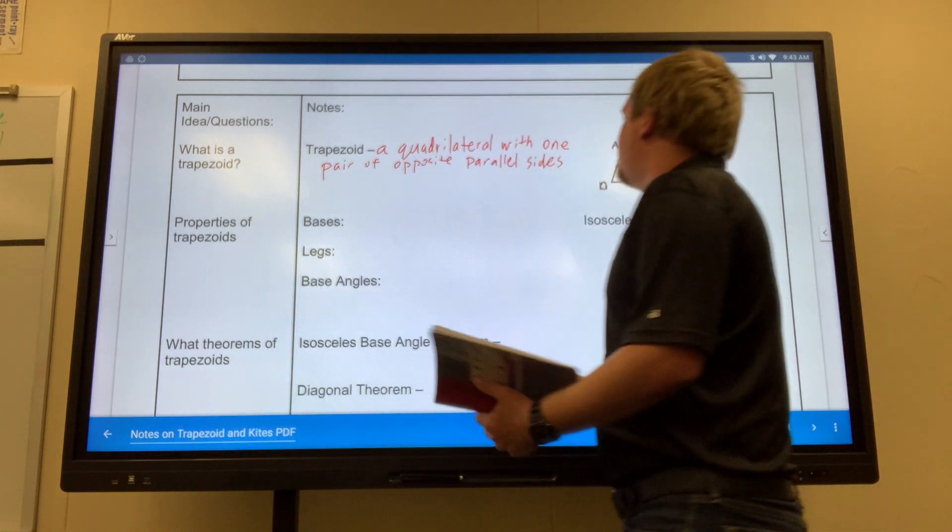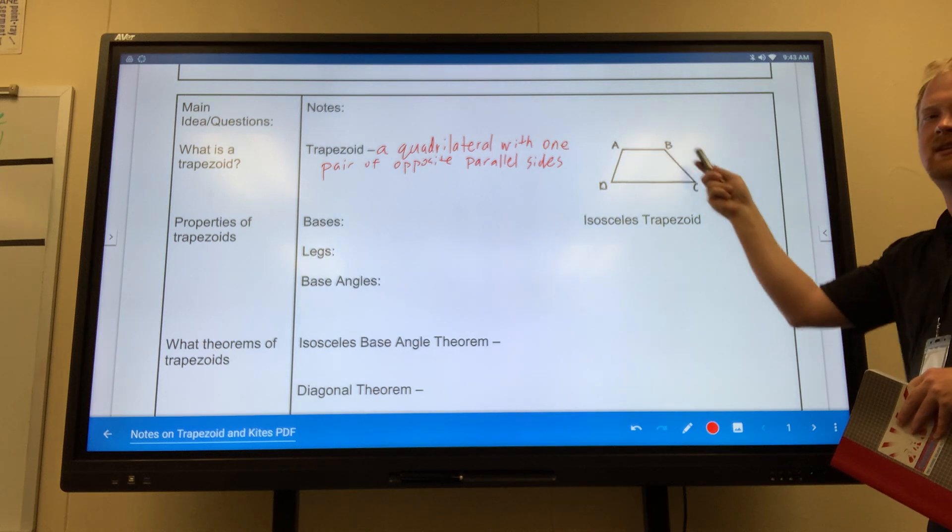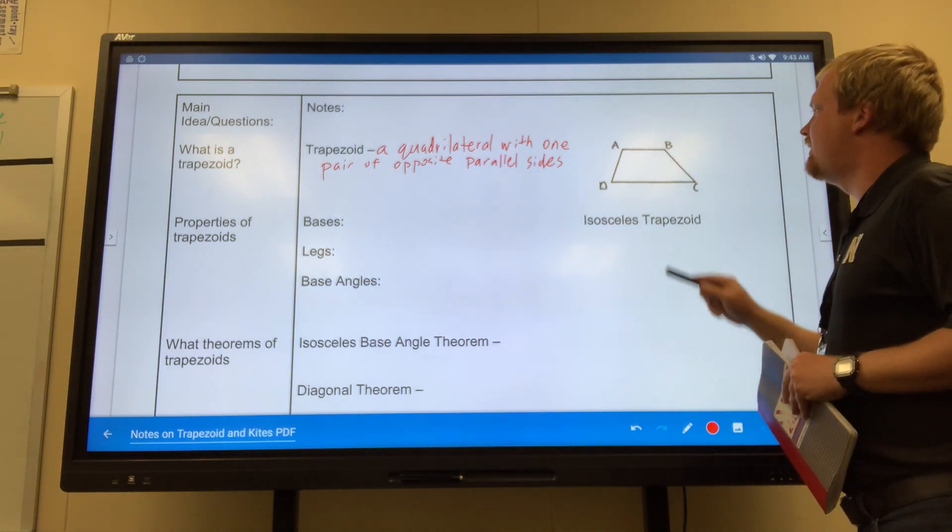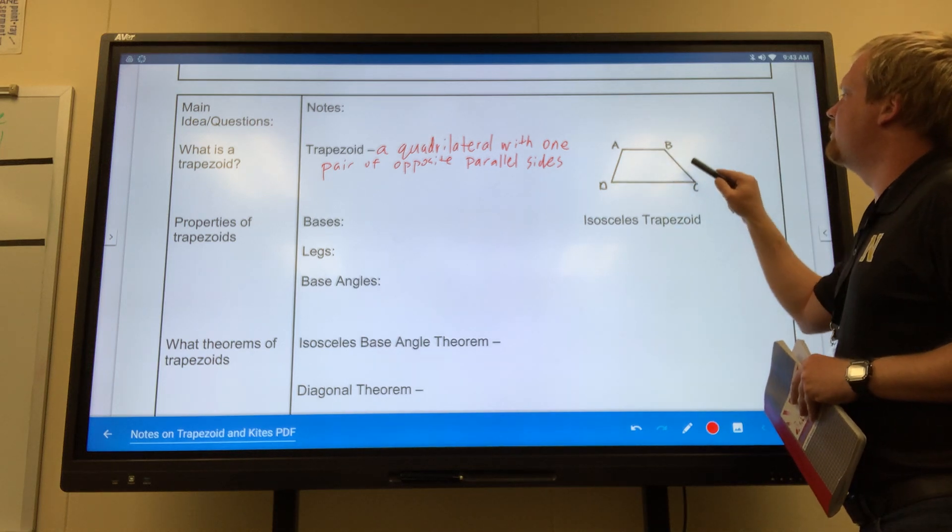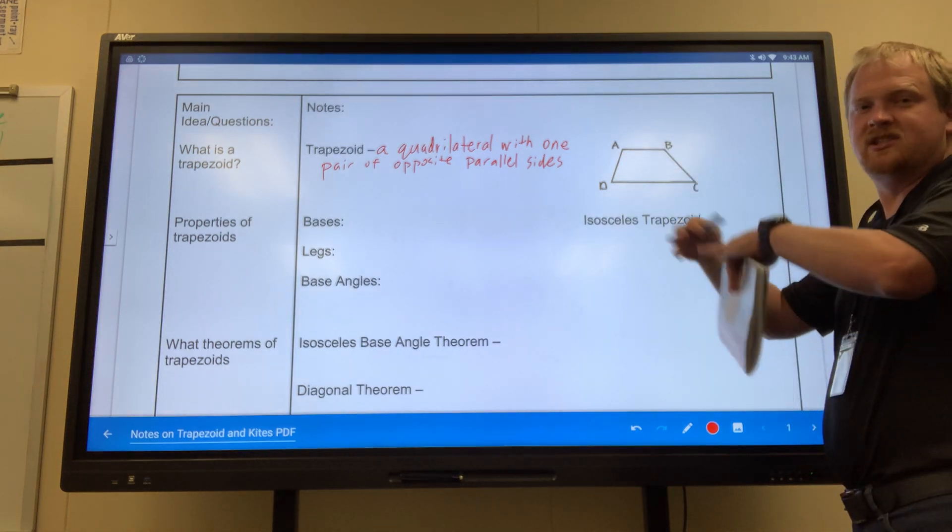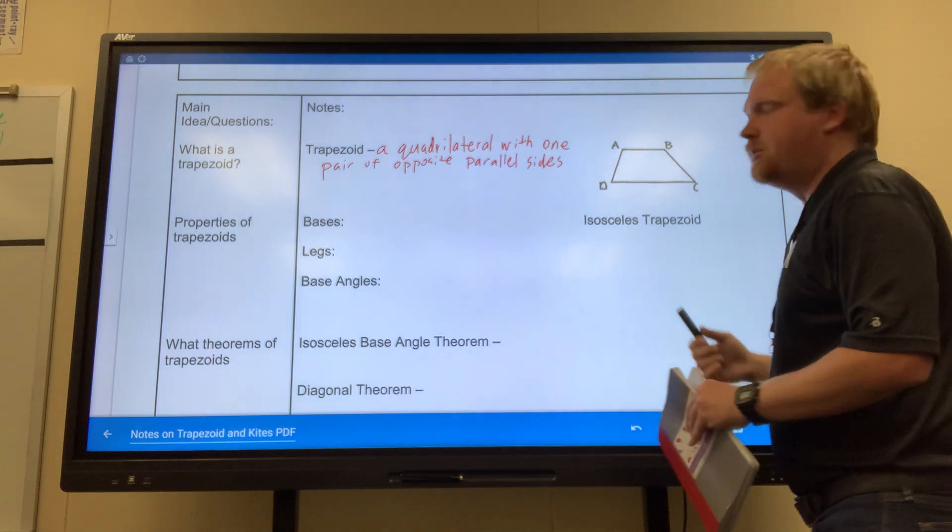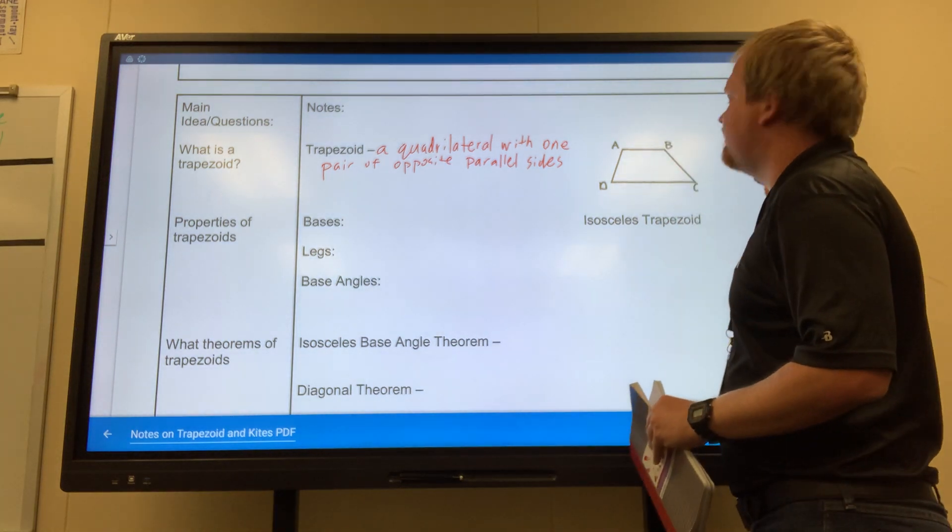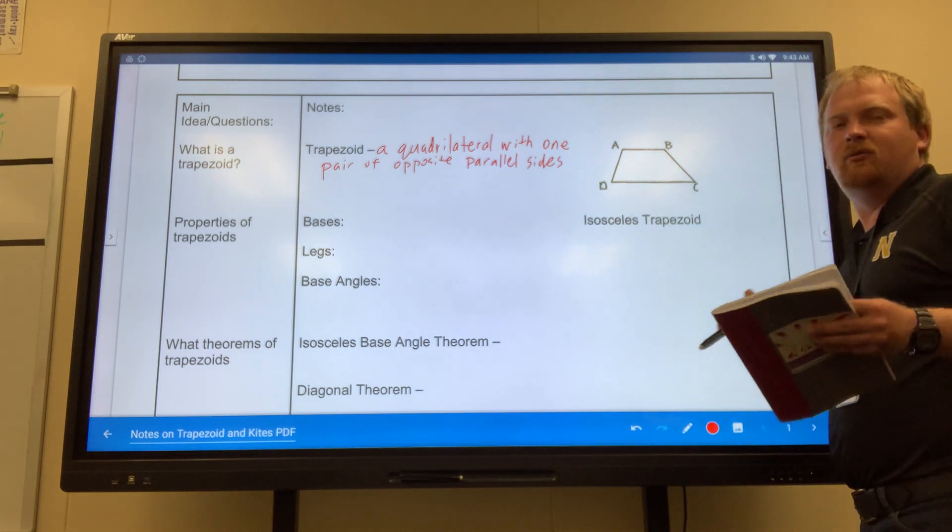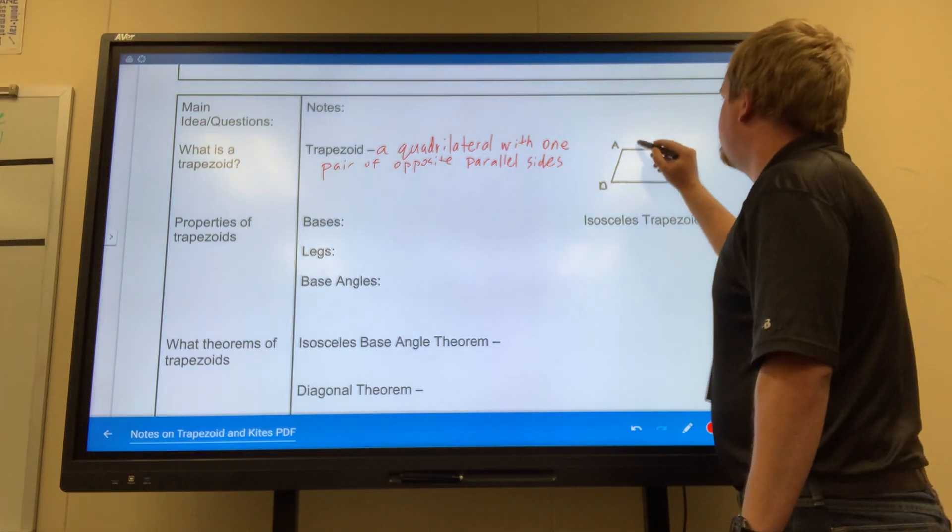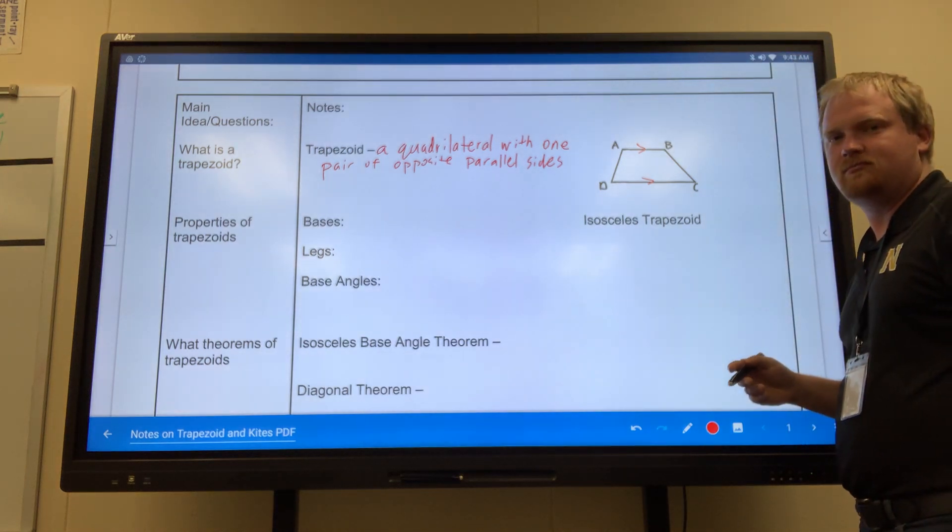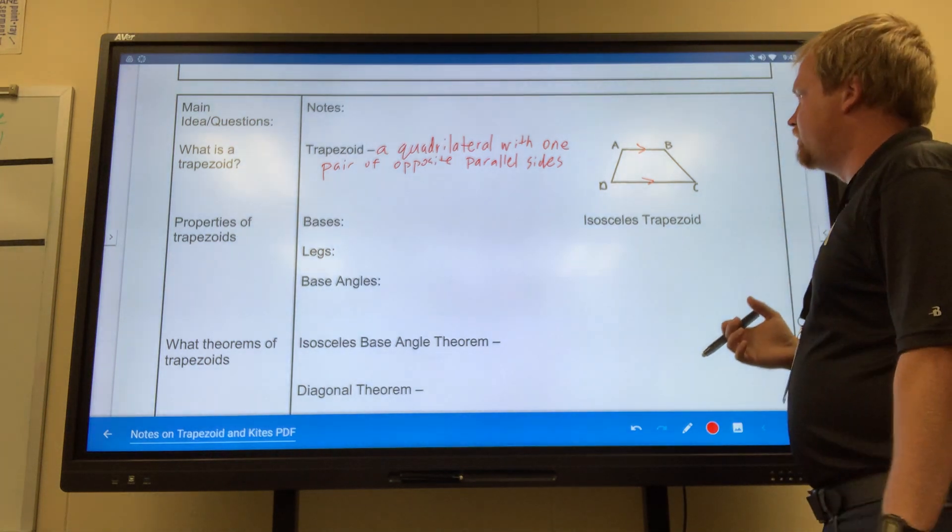For example, if I look at this trapezoid ABCD, I know that AD would eventually intersect with BC if I would extend the line. But because of that, if I extend AB and DC, they won't necessarily intersect. So AB is going to be parallel to DC.